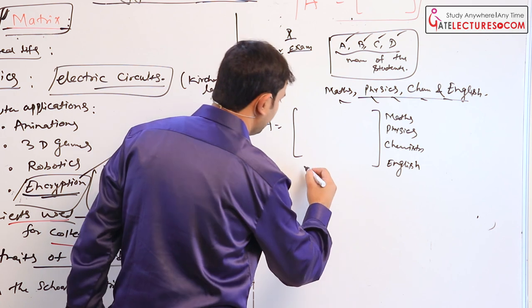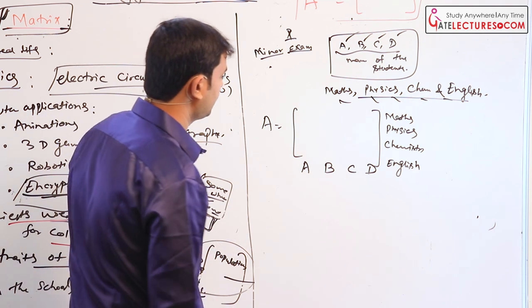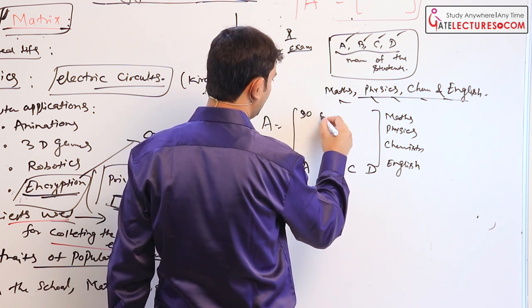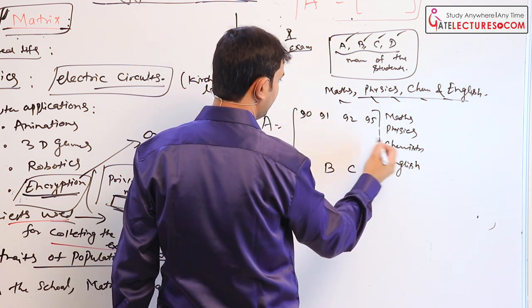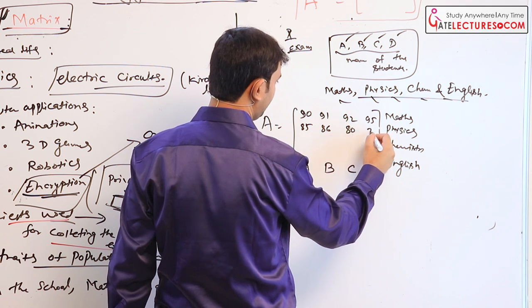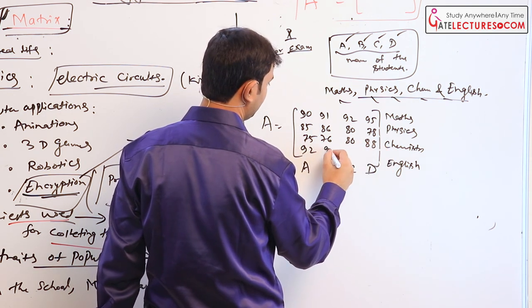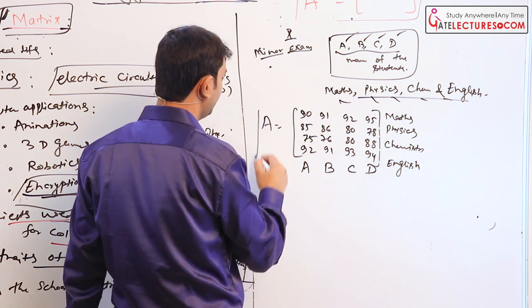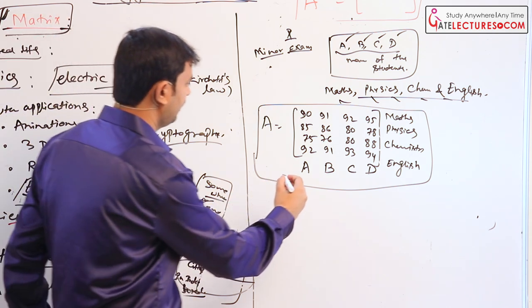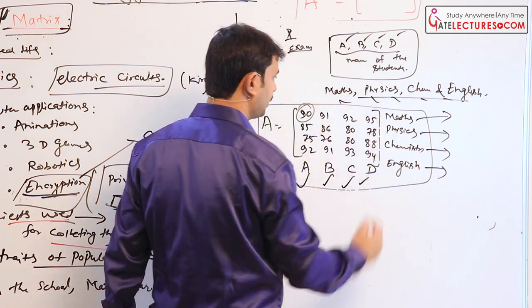And here, in the column, the marks, if you put the marks of the students, suppose A obtained in maths 90, 91, 92, 95. A obtained in physics 85, 86. Take any values. So here, this is also an example. In the particular classroom, this is the name of the students and this is their marks in particular subjects.